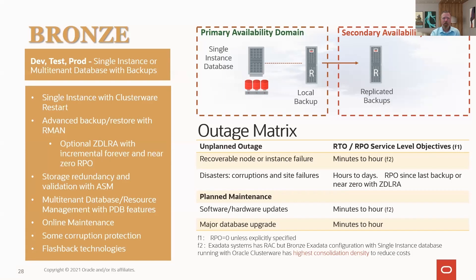Before jumping into hybrid and multi-cloud examples, it's important to understand where we're coming from. In a slightly oversimplified diagram — our single-instance database with a local backup — we're not just doing a local backup. We're the MAA guys, so we want replicated backups in some isolated environment, ideally a separate data center, what we call a second availability domain. RMAN is at the core from a backup standpoint, though you also have our recovery appliances. ASM, online maintenance, and flashback are unique technologies under the Oracle umbrella.